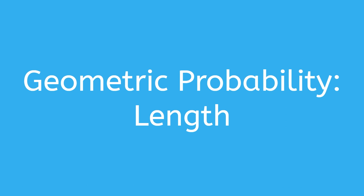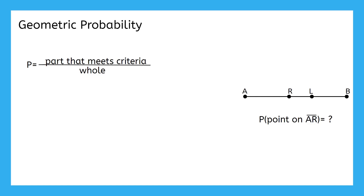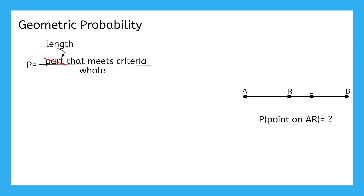Now let's talk about geometric probability involving length. Here's our geometric probability formula again. For area, we replace this with the area that met the criteria over the total area. But what about a problem that doesn't use area and also doesn't have a given number of options? So if a point is randomly chosen on this entire segment and we want to know the probability of the point landing on segment AR, we would use length instead. This gives us the length that meets the criteria over the total length.